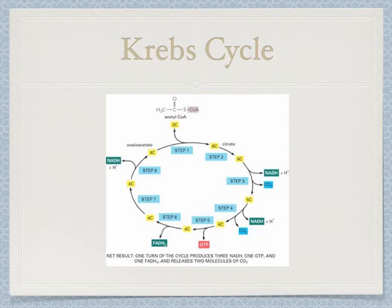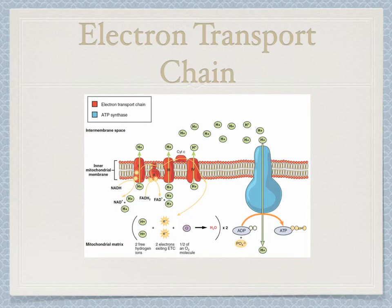After this occurs, oxidative phosphorylation occurs at the electron transport chain. This process occurs in the inner mitochondrial membrane. It is important to know that you have both NADH and FADH2. NADH and FADH2 are then converted into NAD+ and FAD through redox reactions, and the electrons are released in this process.